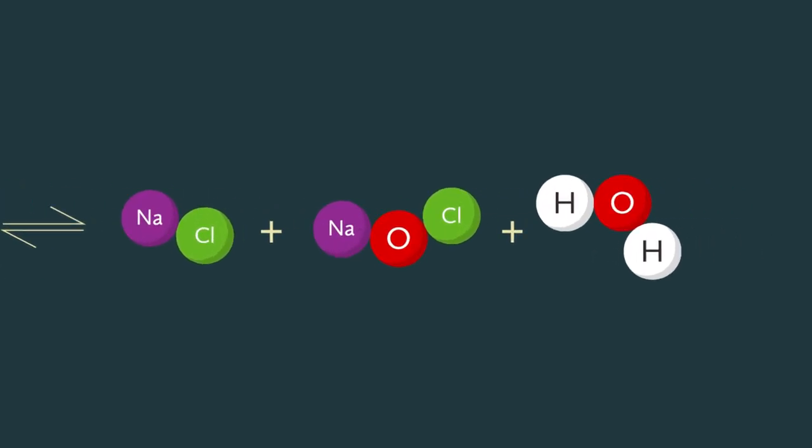As well as sodium chloride salt and water, we also get sodium hypochlorite, made up of a normal sodium 1 plus cation and the hypochlorite 1 minus anion seen here.